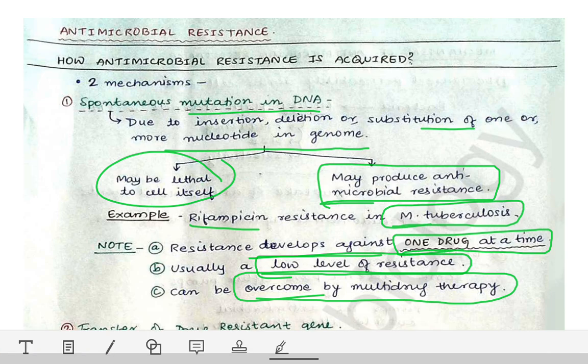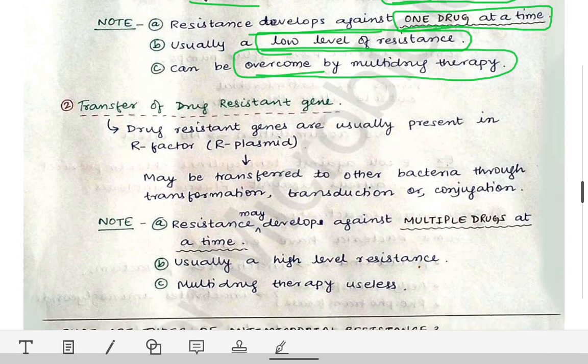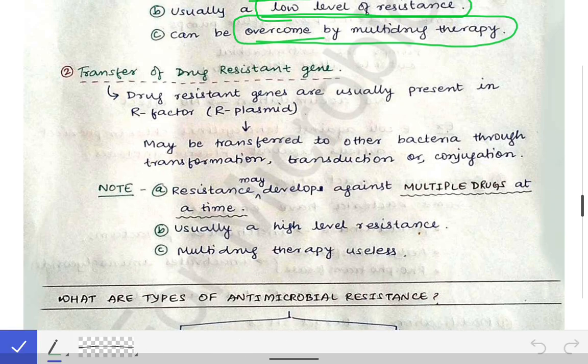The second mechanism of acquiring antimicrobial resistance is the transfer of drug-resistant genes from one bacterium to another. The drug-resistant gene is usually present in the R plasmid. When the R plasmid is transferred from one bacterium to another, the drug-resistant gene is also transferred, causing the acquiring of antimicrobial resistance.